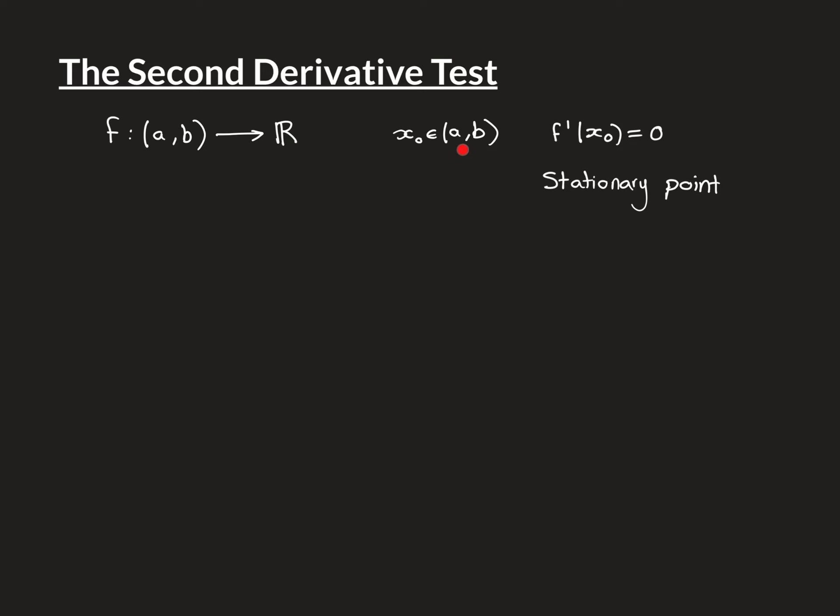If we have some x₀ within the open interval where the function is differentiable and the derivative is equal to 0, we call that a stationary point. The second derivative test is about stationary points and making conclusions about their nature using the second derivative. For this, the function needs to have a second derivative at the point x₀. If that is the case, you can use the value of the second derivative to infer things about the stationary point.